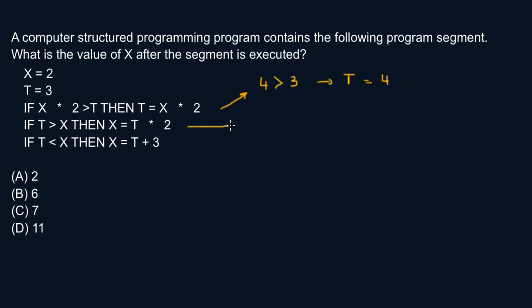Now under this condition, if T greater than X: T is now 4, greater than X which is 2, so this statement is true. Then X becomes T times 2, which is 4 times 2, so that's 8.